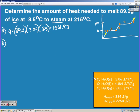Then we're going to melt it, so we use Q equals MHf. Then we're going to heat it again, so we need to use MCAT.